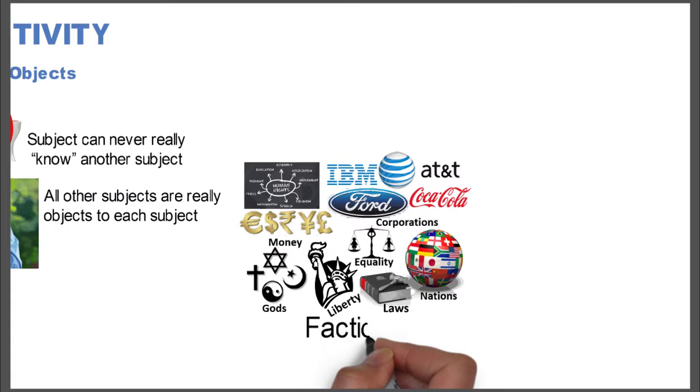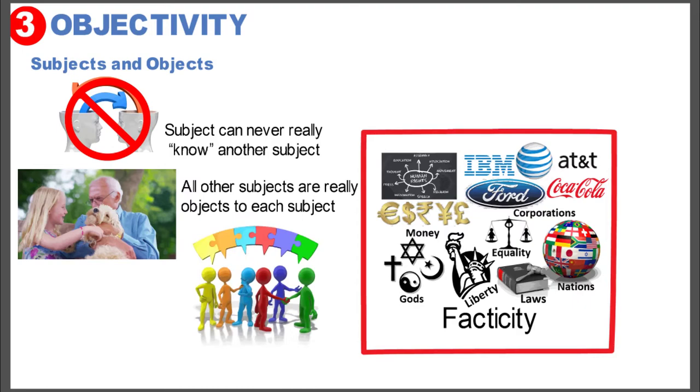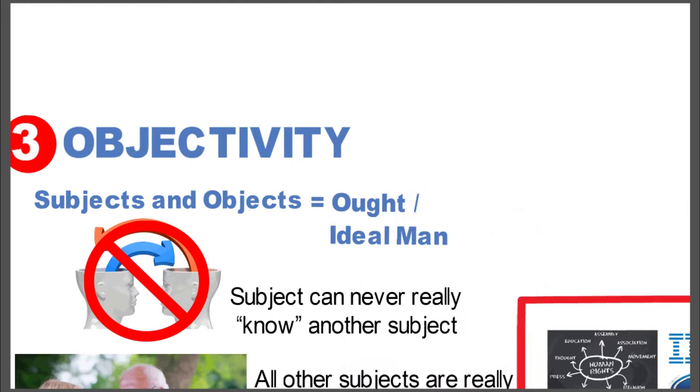When you look at the facticity, the other issue is that in the world in which you're functioning, we need others. It's a world of others. So we need to come up now with, in terms of an objective world, how we function in that world of others when we can never really know.